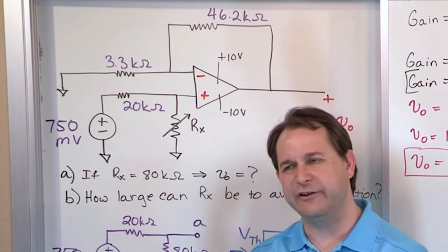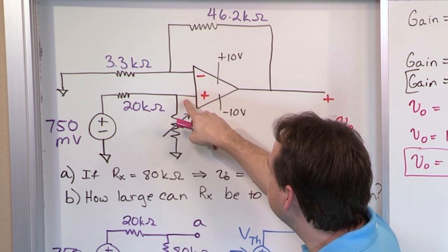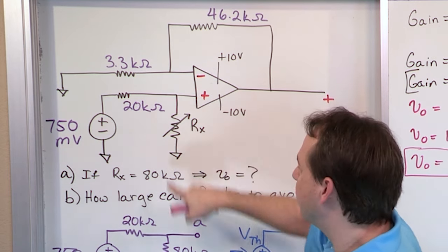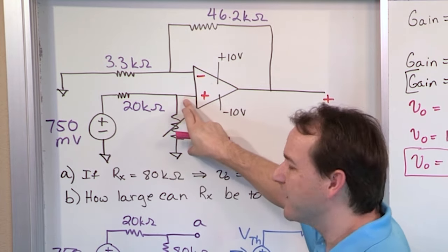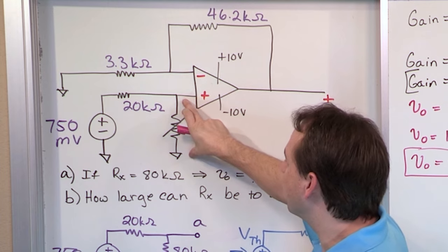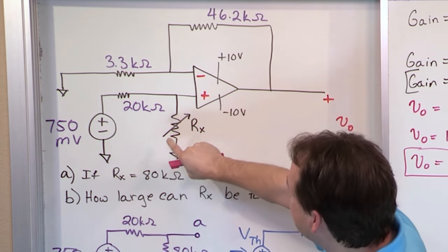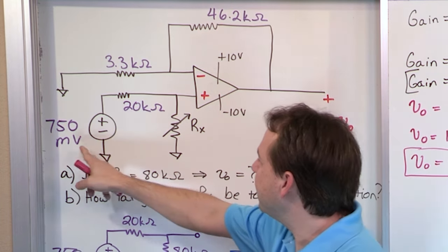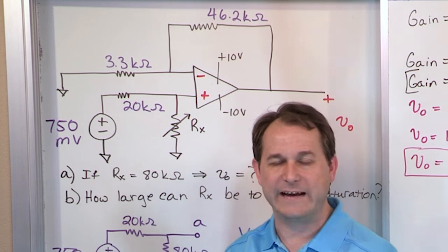Before we calculate it, let's do a thought experiment. We have 750 millivolts and a voltage divider. The voltage across R_X will vary as I turn the knob. If I turn R_X all the way to zero, it's a short circuit and there's no voltage across it. But if I turn R_X all the way up to a very large resistance, most of the voltage appears across it — all the way up to the full 750 millivolts at infinity. So eventually R_X will be so big that the amplified fraction exceeds the saturation region.